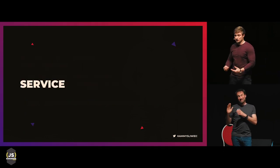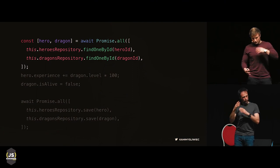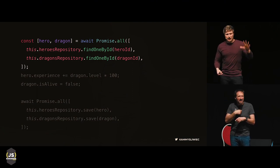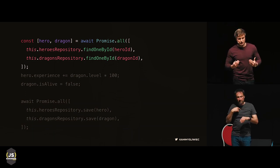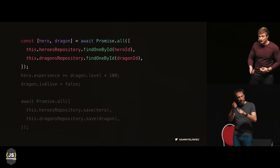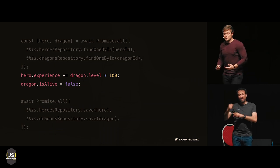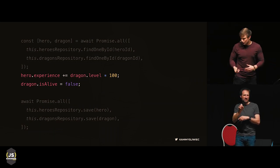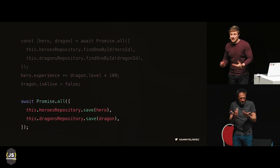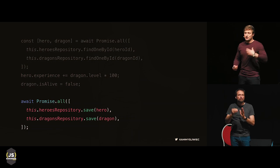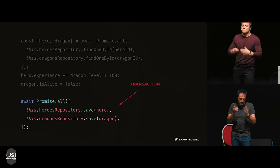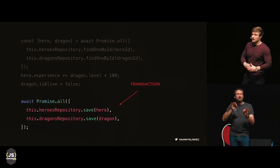The service holds the business logic. Assuming we have a HeroService with a slayDragon method: we fetch the hero and dragon entities asynchronously from the database. Our business logic is to increase points of experience and set the dragon's alive status to false, because we just killed the dragon. Then we save these changes using our repositories. In the best case, this should be wrapped in a transaction, because we want to update both hero and dragon — never just one of them.